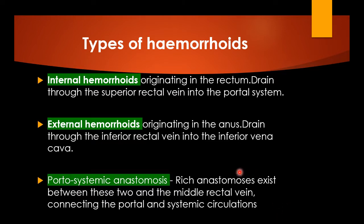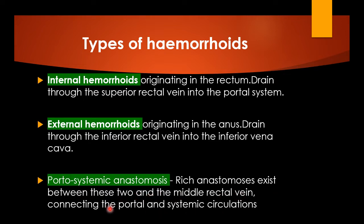There are two main types of hemorrhoids. Internal hemorrhoids originate high up in the anal canal or lower rectum and are drained through the superior rectal vein into the portal system. External hemorrhoids originate in the lower anus and drain through the inferior rectal vein into the inferior vena cava. Between these two venous systems there is a rich anastomosis involving the middle rectal vein, connecting the portal and systemic circulations.